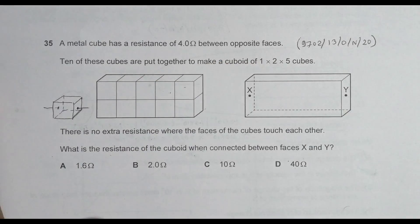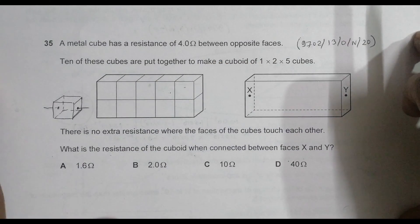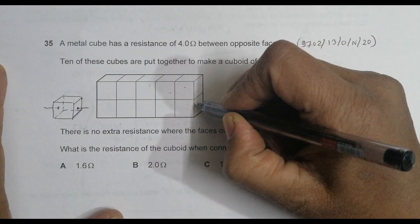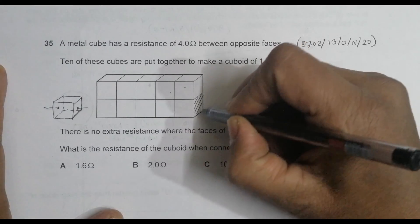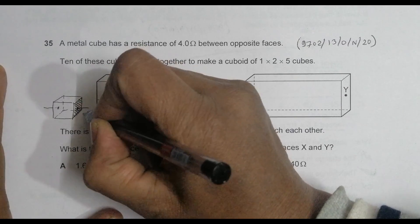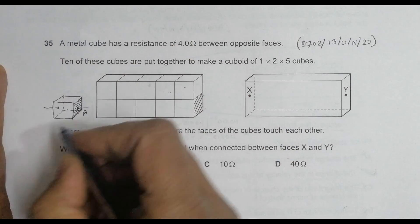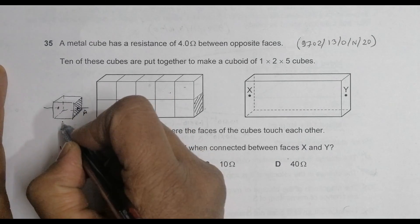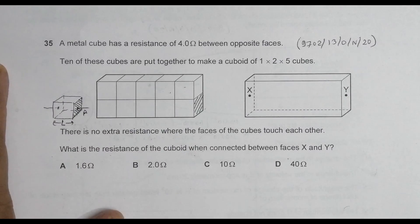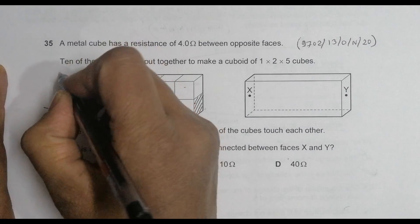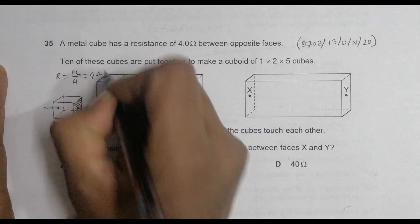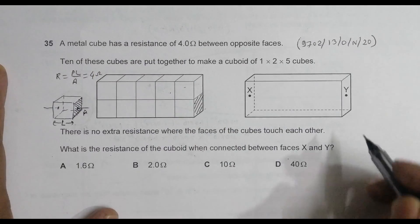So let's first say that this cross section, this area of one of the cubes, let us say this area, it is A. And this length is L. So L here and A there. So we will have resistance of one of them equal to R equal to ρL by A, and that's equal to 4 ohm.